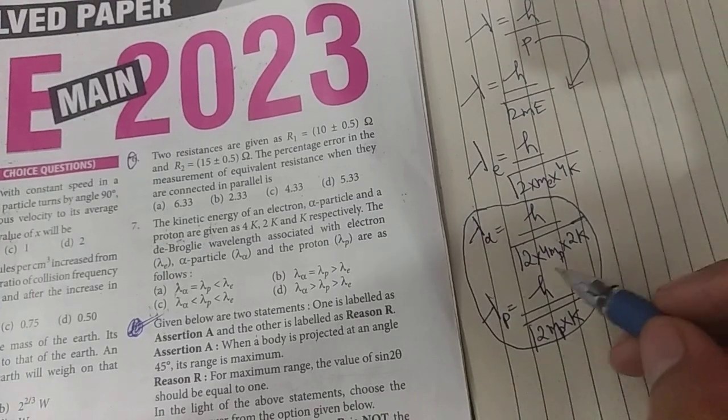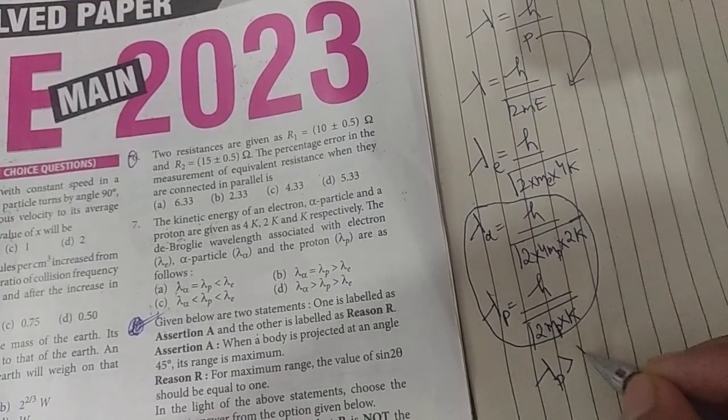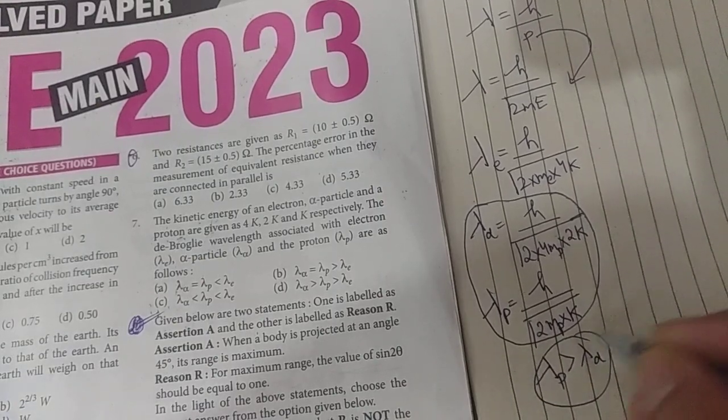So here we know that lambda of proton is basically greater than lambda of alpha particle. So this is the direct relation.